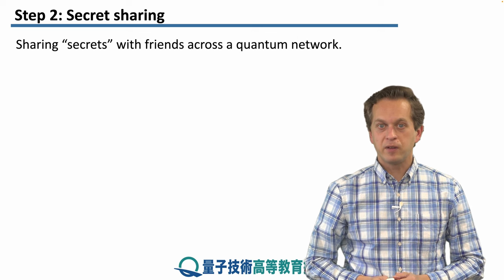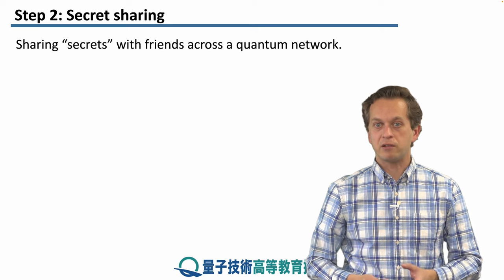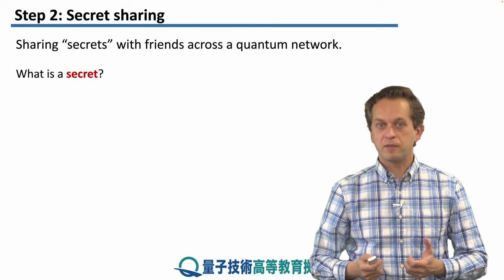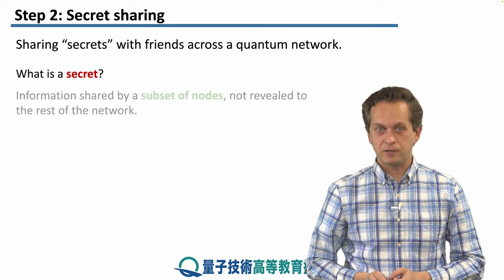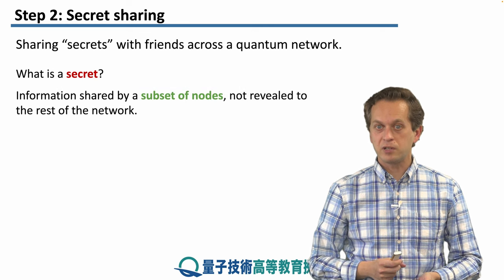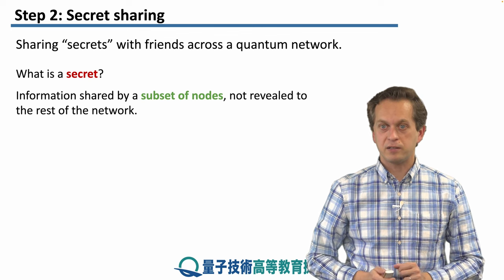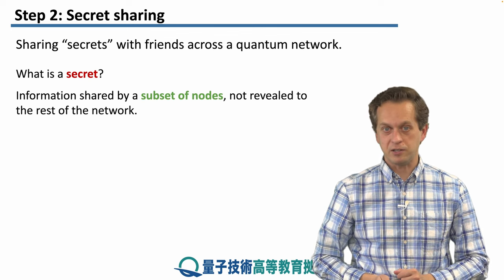Let's imagine the scenario where a group of friends that are using a quantum network would like to share some secret. The first question is what is a secret? Well, it's really any information shared by a subset of nodes that's not revealed to the rest of the network. That's the main scenario, main goal of this application.